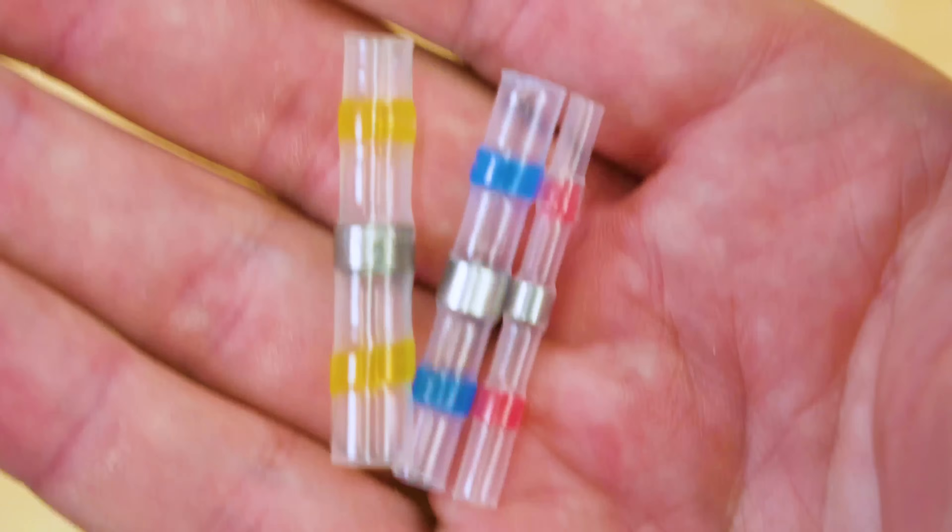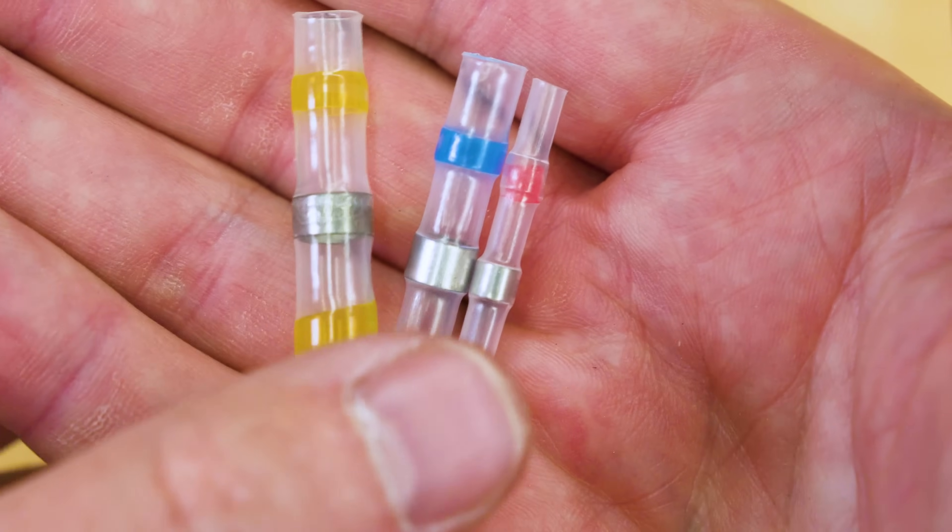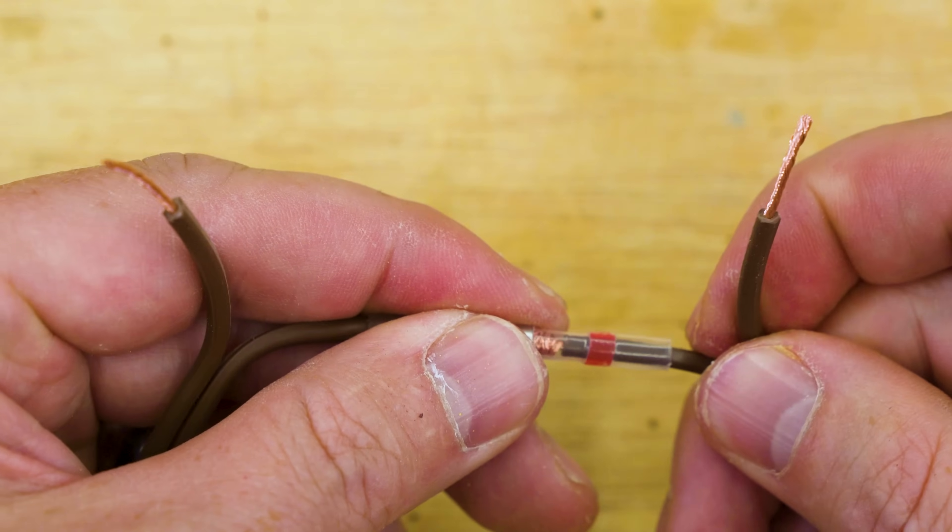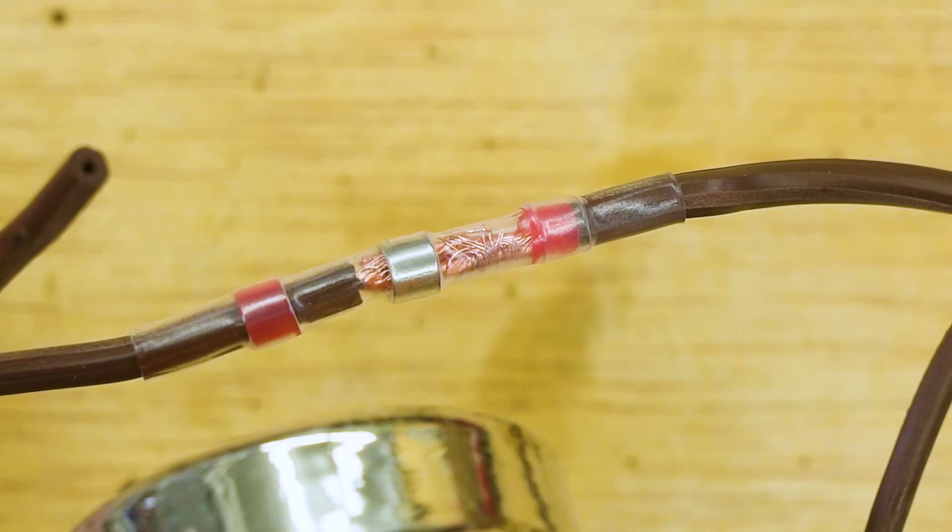A huge step up from the butt connectors is what's called solder seal wire connectors. And now there are different names for this, just like many things, because there are different products and different brands, but this is super clever. These are designed in such a way that you only need one tool to apply these. And that is heat. That can even be something as simple as a lighter, though I definitely suggest that you use either a butane torch or a better than that, a heat gun.